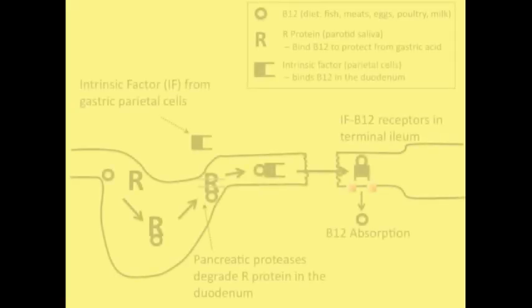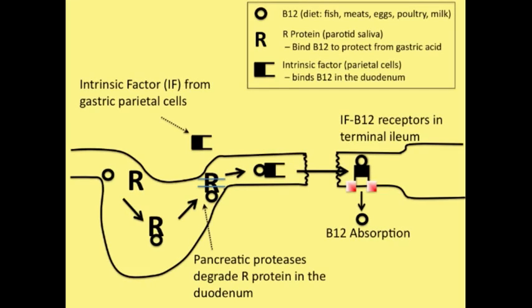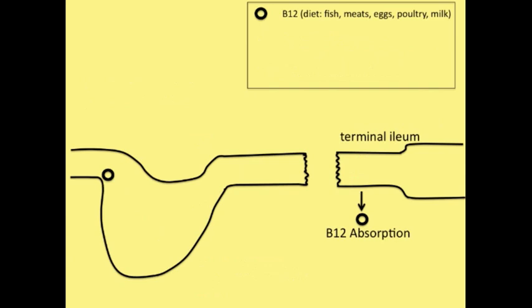Next, we're going to look at B12 absorption. You have to know this pathway because there are many consequences when things are not going right. So it's a busy diagram. Let's break things down one by one. First, we have B12.